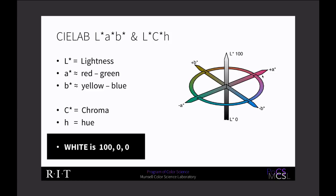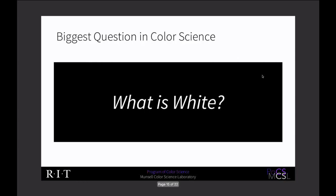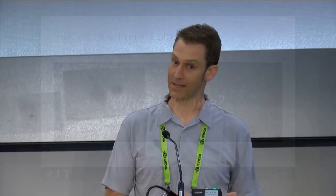The most important thing is that white is at the top of this diagram at 100 L* and 0, 0 A* B*. But white is always kind of relative. The biggest question in color science is often: what is white? Because in a given situation, white is very indicative of what people are adapted to. If you can answer what is white in a given situation, you can do a lot of computational things to figure out what color appearance is.